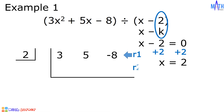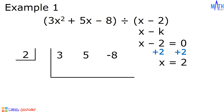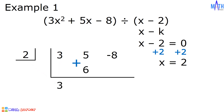This is row 1, or the first row; this is the second row; and this is the third row. Let us divide. Bring down the first coefficient and multiply by 2. The product will be written in the second row. 2 times 3 is equal to 6, and we will add 5 and 6, and the answer is equal to 11.